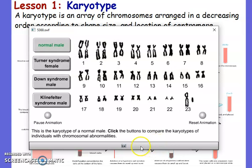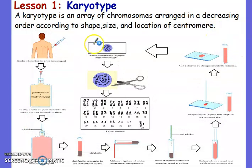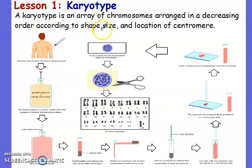This is the karyotype of a normal male. So, what is a karyotype from the animation we saw? A karyotype is an array or arrangement of chromosomes arranged in decreasing order — from the largest to the smallest — according to the shape, the size, and the location of the centromere, which is the point of intersection of the two chromatids.